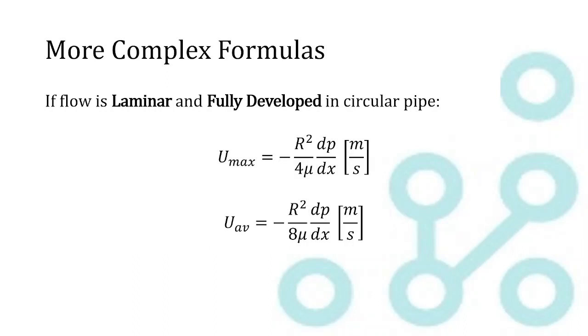Some other more complex formulas that you might need to remember for some scenarios, you can also calculate or relate the maximum and the average velocity to pressure drop. So U max is equal to negative R squared over 4 times the viscosity times dP over dx. And the average velocity is equal to negative R squared over 8 times the viscosity, all times dP over dx. The previous formulas are going to be easier if you just need to calculate maximum and average velocity.